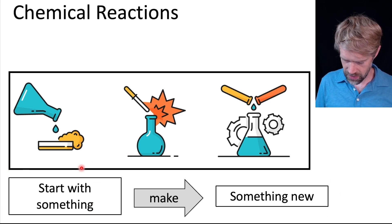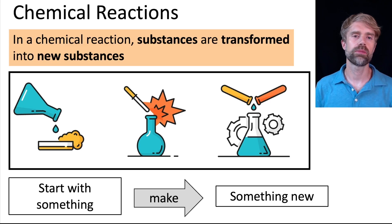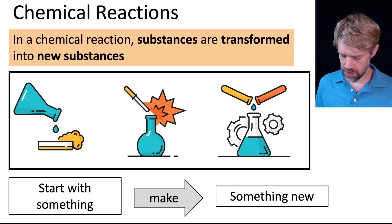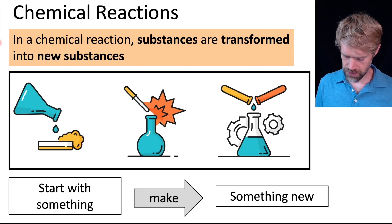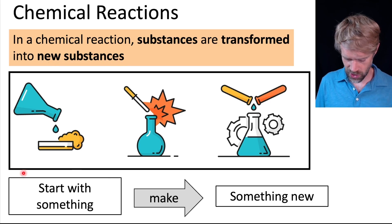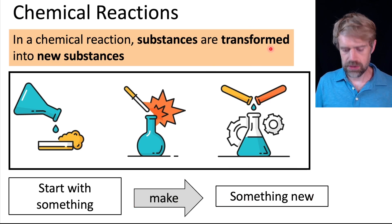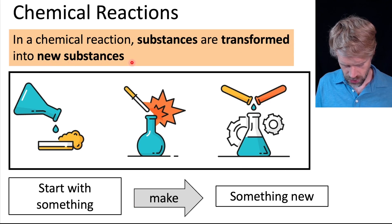We start with something, and we make something new. We usually need to learn a little bit of technical language for the TEAS. So here is a more accurate way to describe chemical reactions. We can say that in a chemical reaction, substances are transformed into new substances. That's a fancier way of saying you start with something and make something new.